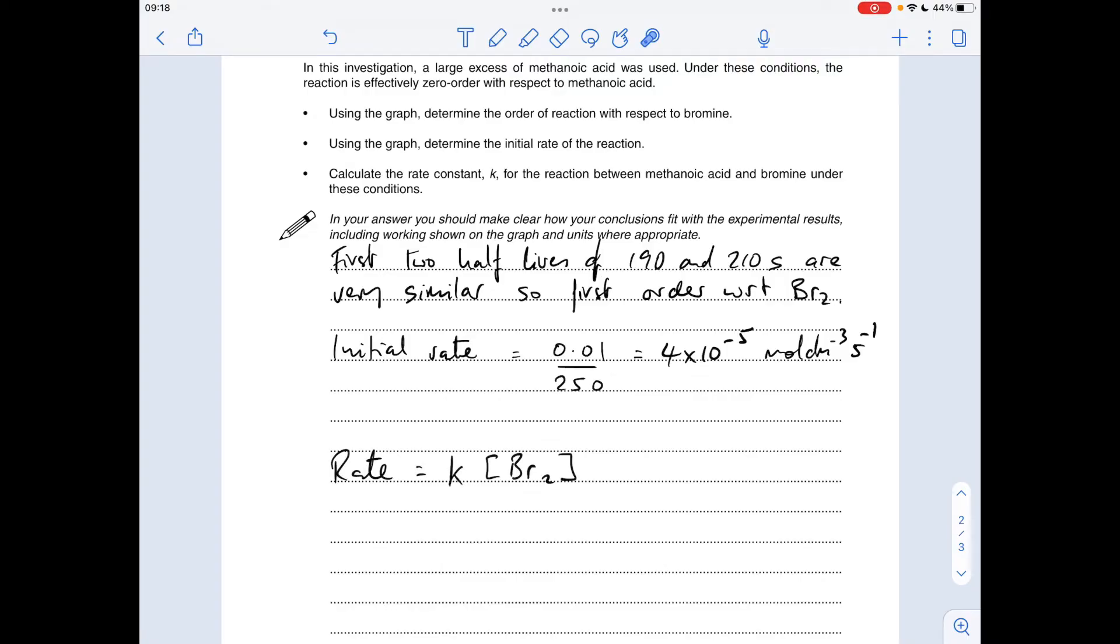Moving on to the calculation of the rate constant. So our rate equation is just going to look like this because we're told that since the methanoic acid is in a large excess, it's effectively zero order. So we're going to ignore the methanoic acid. The rate equation is literally just that.